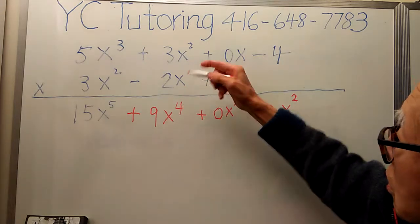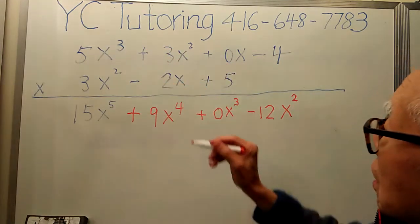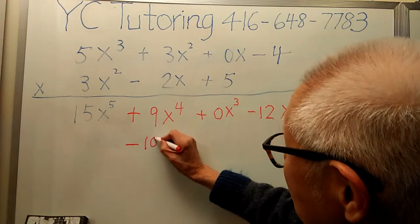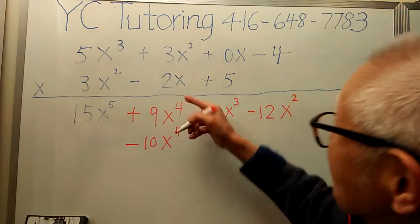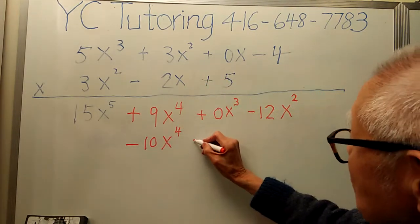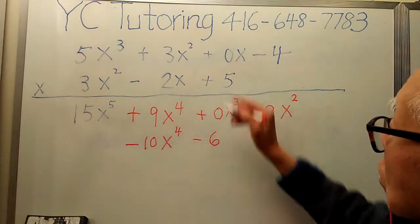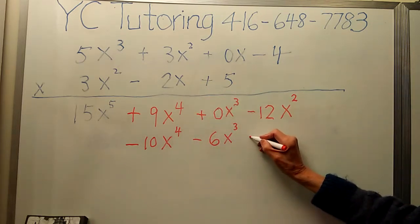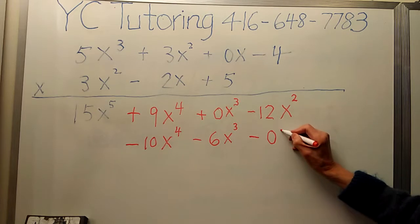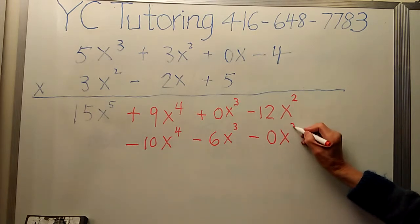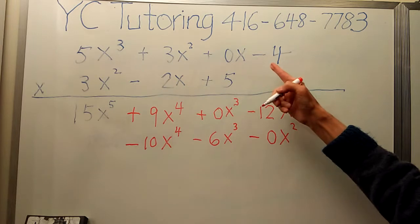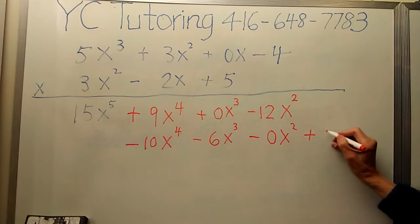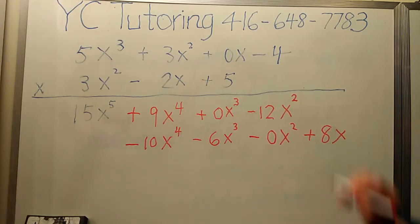The next is this times that, which gives me negative 10x to the power 4. And this times that is negative 6 to the power 3. And this times that is 0. This times that is negative negative becomes positive. It's positive 8x.